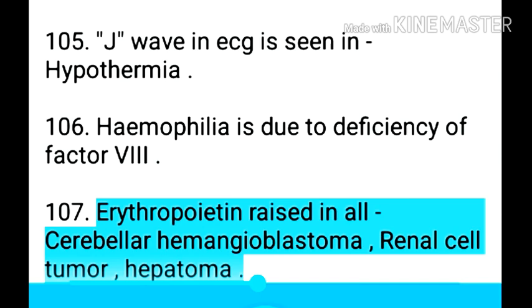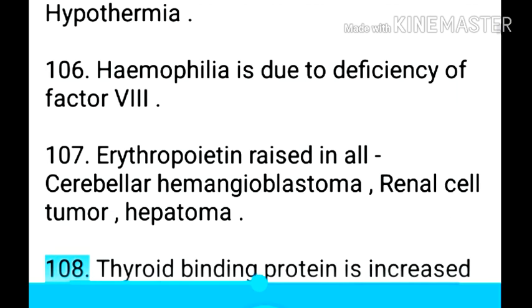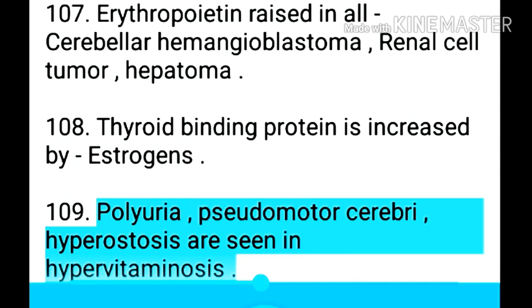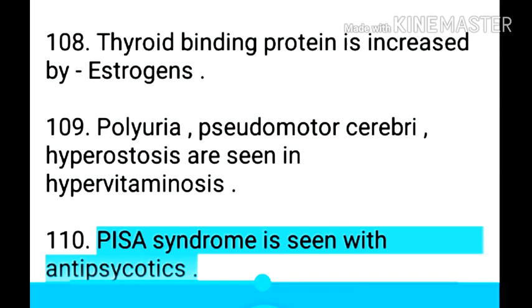Point 108: Erythropoietin is raised in cerebellar hemangioblastoma, renal cell tumor, and hepatoma. Point 109: Thyroid-binding protein is increased by estrogens. Point 110: Polyuria, pseudotumor cerebri, and hyperostosis are seen in hypervitaminosis A.